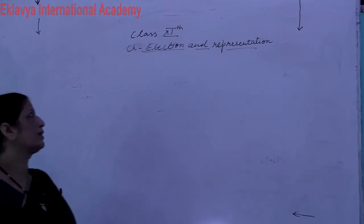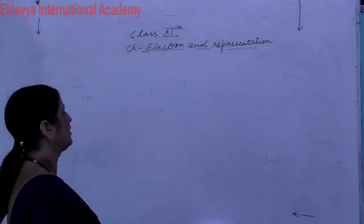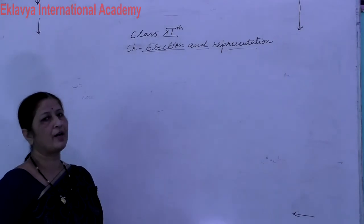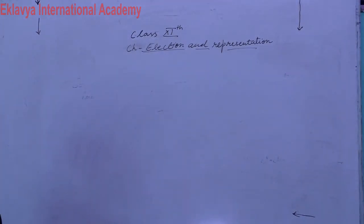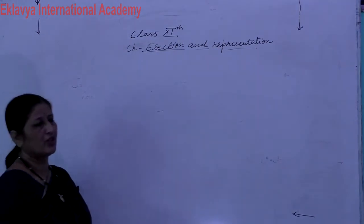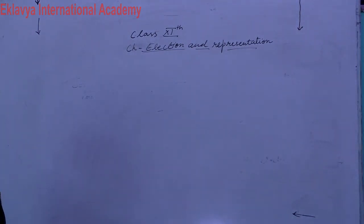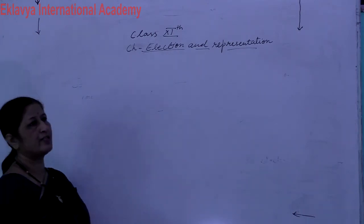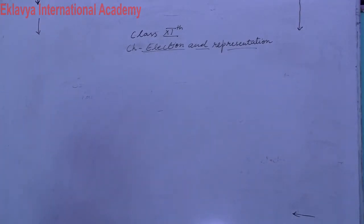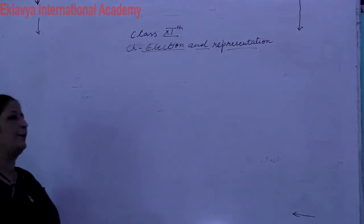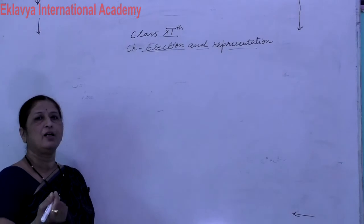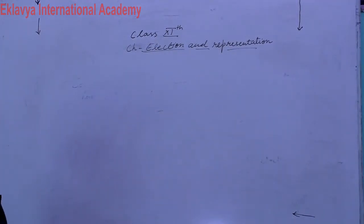Good morning students. Today we will discuss again Chapter 3rd: Election and Representation. In the previous lecture, we already discussed the independent election commission. For free and fair election conduct, we set up the independent election commission under Article 324. All types of elections — president, state legislative assemblies — these responsibilities belong to the election commission. However, the election commission does not conduct local government elections.